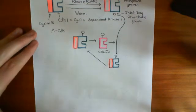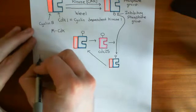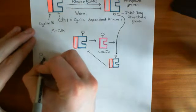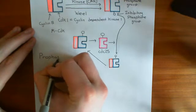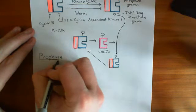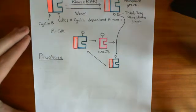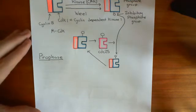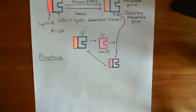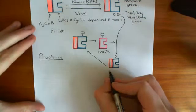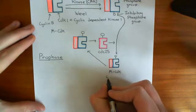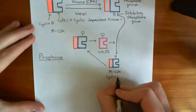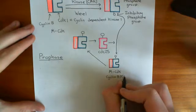The first stage of mitosis is known as prophase. The phases of mitosis are split into many different stages, and we're going to go through them one by one. In prophase, two important things happen, and they are both caused by the rise in this active MCDK — the cyclin B CDK1 complex — which is going to trigger prophase.